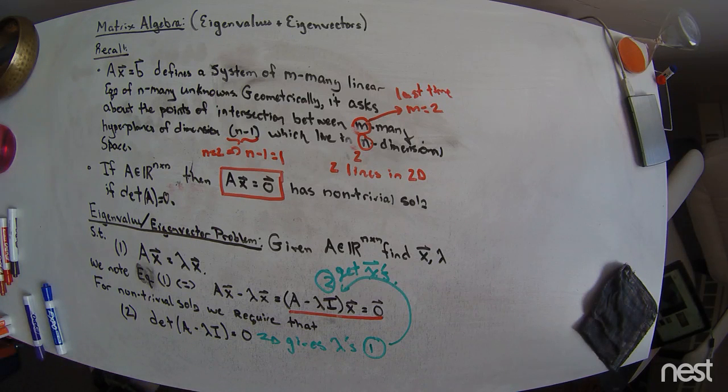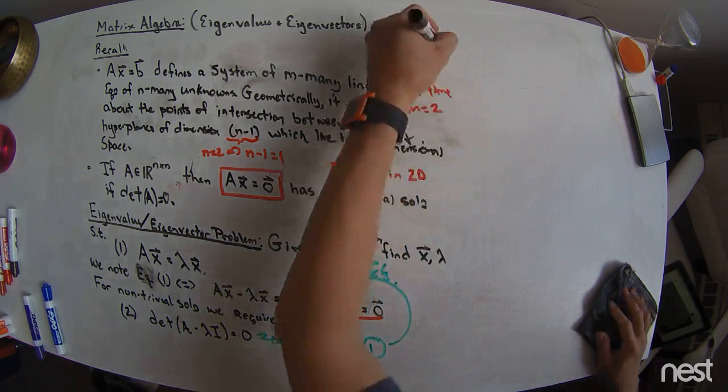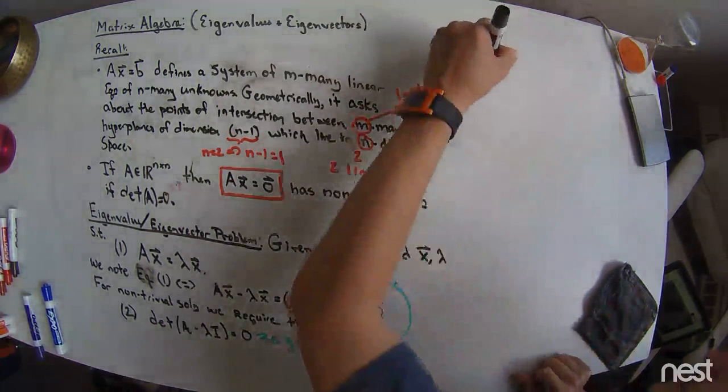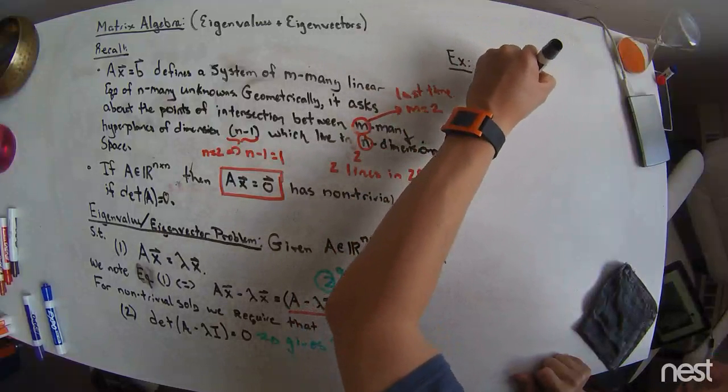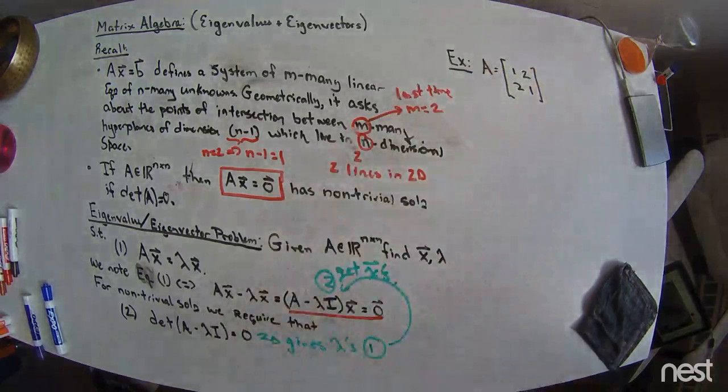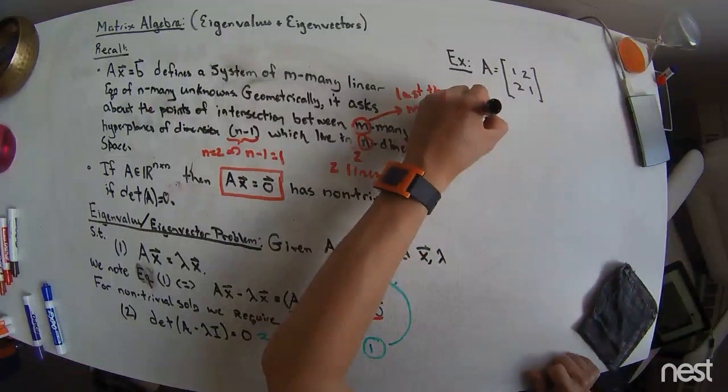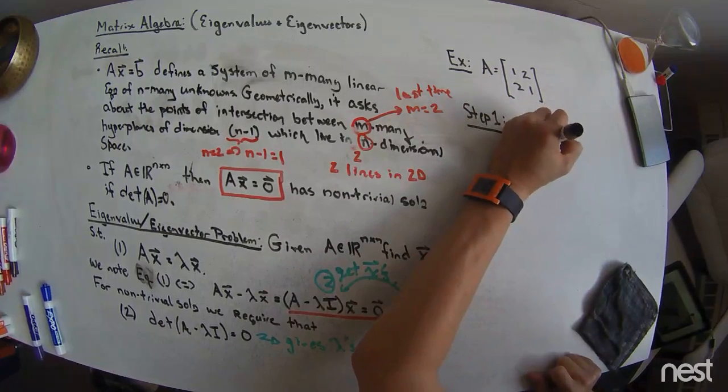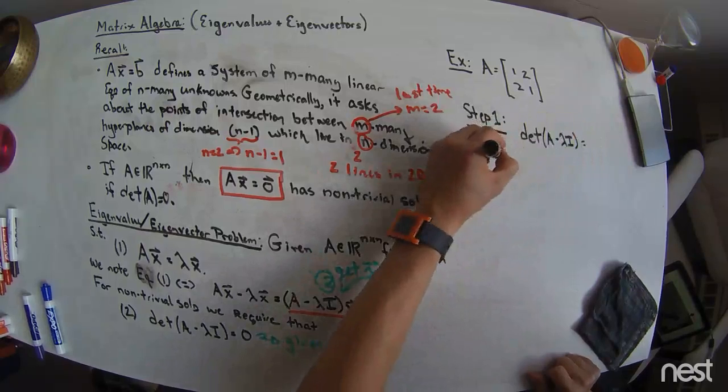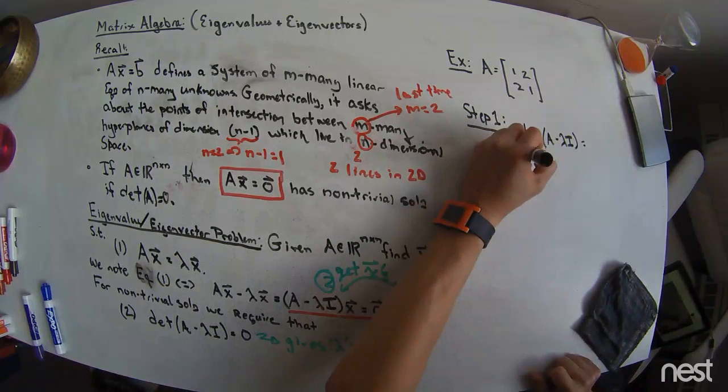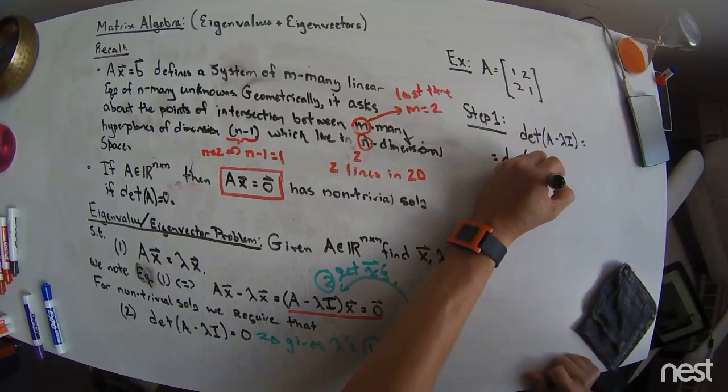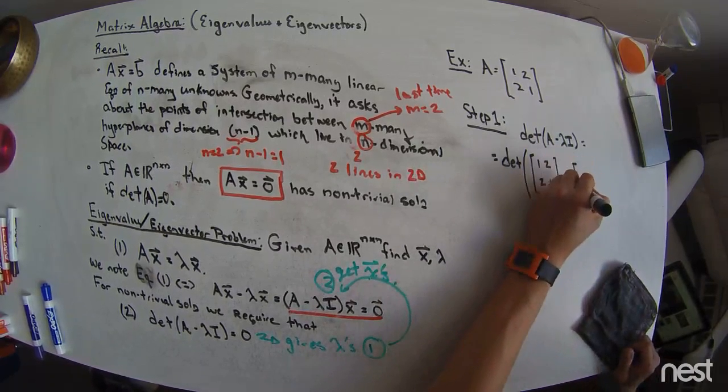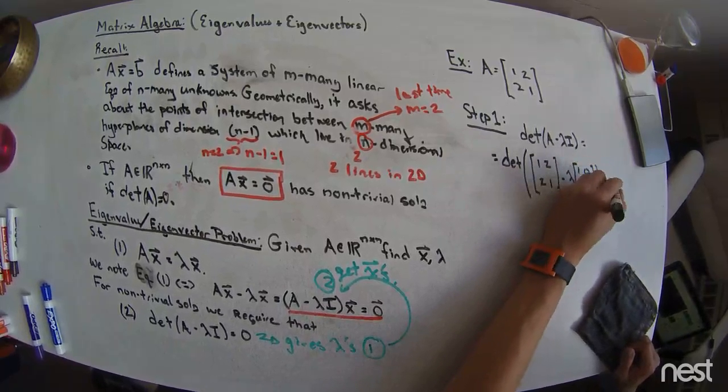Let me do one example, then. Here, up in this example, what do I want to do? Let's say the matrix A is equal to 1, 2, 2, 1. I want to calculate its eigenvalues and eigenvectors. So, step one is I'm going to take the determinant of A minus lambda I, and that's equal to the determinant of the matrix where I have A, which is 1, 2, 2, 1, minus lambda times 1, 0, 0, 1, the 2 by 2 identity matrix.